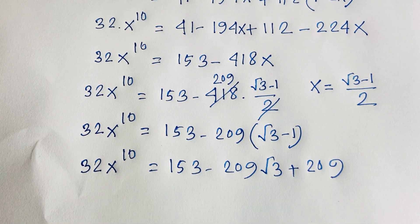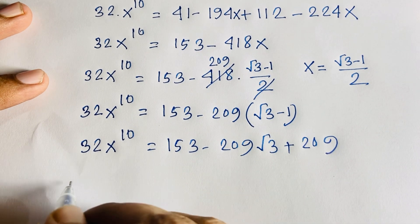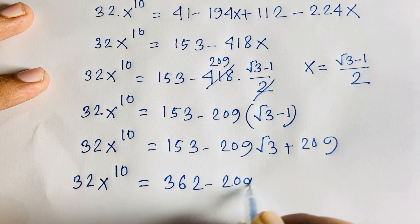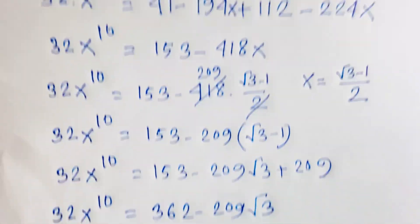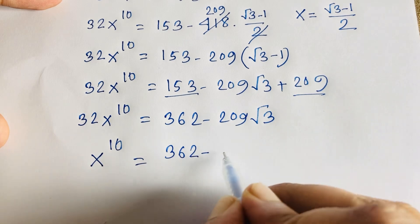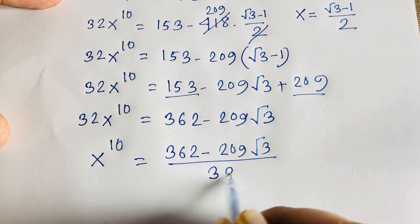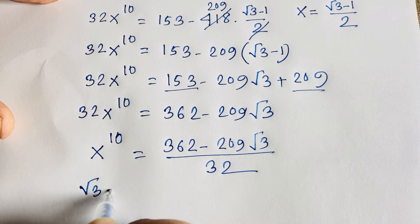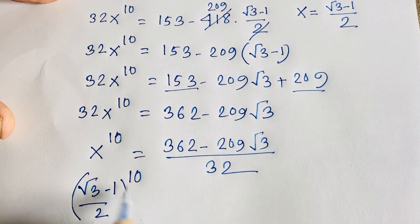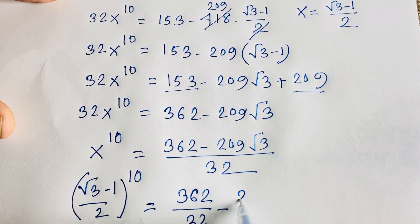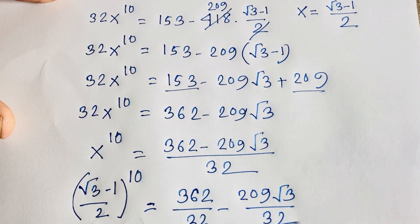Adding 153 plus 209 gives 362. So 32x^10 = 362 minus 209√3. Dividing both sides by 32, we get x^10 = (362 minus 209√3)/32. Since x = (√3 minus 1)/2, our final answer is: ((√3 minus 1)/2)^10 = (362 minus 209√3)/32.